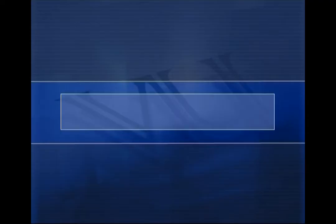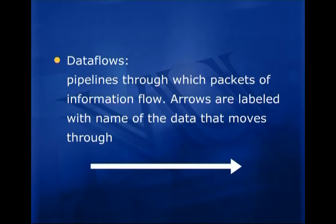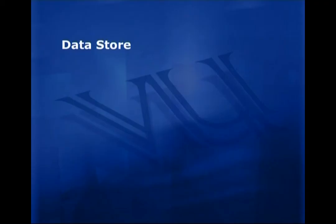Now we study the different symbols used in DFD. The first symbol is data flow — these are the pipelines through which packets of information flow. Data flows are represented with arrows, labeled with the name of the data moving through. The arrow direction shows that data moves from the tail to the head of the arrow. The second symbol is the data store — a store, collection, or repository where data is kept for future processing, represented as an open rectangle labeled with a noun.